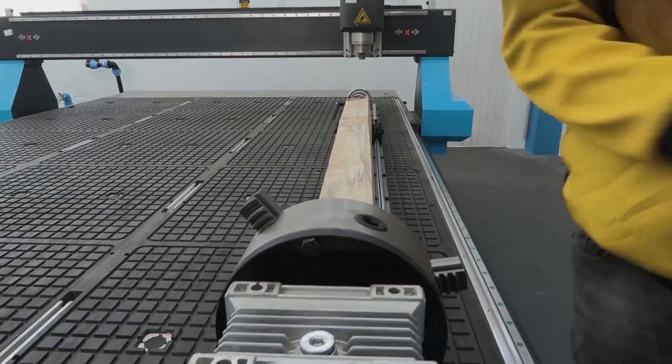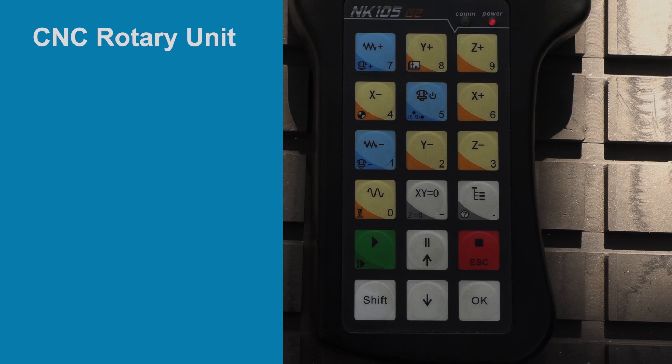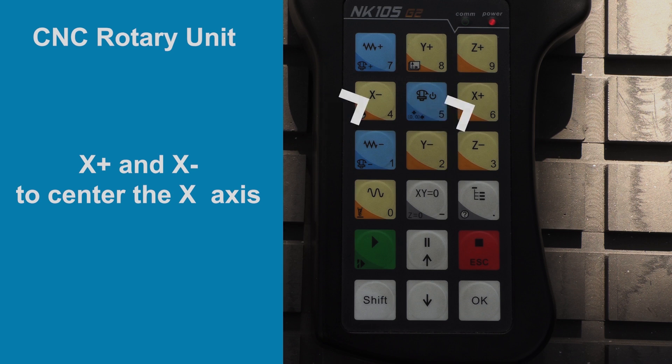From here, we're going to use the remote control. Firstly, we are going to center the starting position on the y-axis by pressing y- or y-plus. And we use the x-axis to turn the rotary by pressing x- or x-plus.